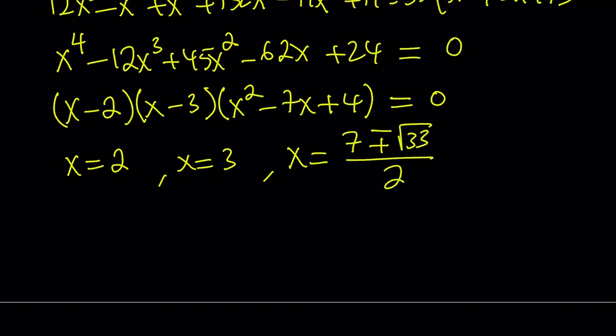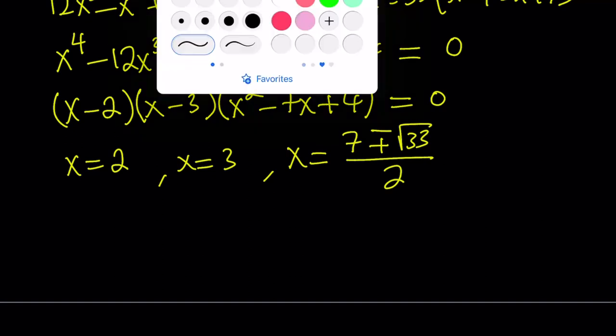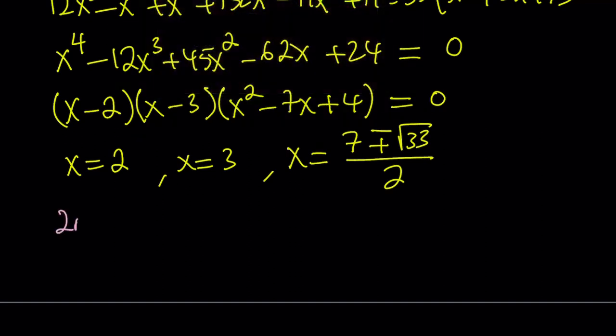x equals 7 plus minus the square root of 33 all over 2. So those are going to be the solutions. Since it's quartic, it has four solutions. And in this case, they all happen to be real solutions. Make sense? Hopefully it does. Let's go ahead and talk about the second method now.